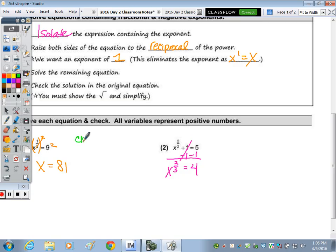To check, we substitute in the original equation: is 81 to the one half equal to nine? The one half power means the square root. So square root of 81 to the first is nine. It checks.